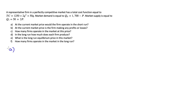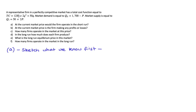In part A we're asked: at the current market price, would the firm operate in the short run? My advice for approaching these large questions is to sketch out roughly what we know from the question first. That usually gives a clue on how to proceed and helps sort out our information. We know the total cost function, and we can get our average and marginal firm cost functions from it later.